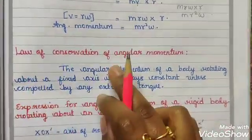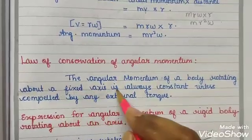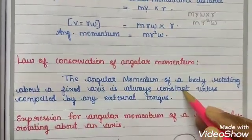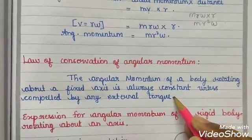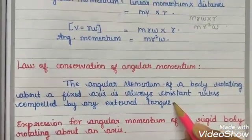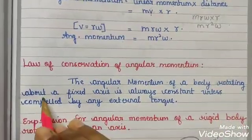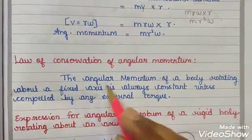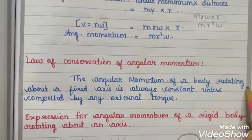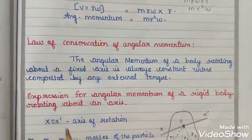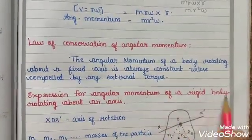Law of conservation of angular momentum: the angular momentum of a body rotating about a fixed axis is always constant unless compelled by an external torque. Torque is an external force. When there is no external force, the body will continue in its same state of rotation.